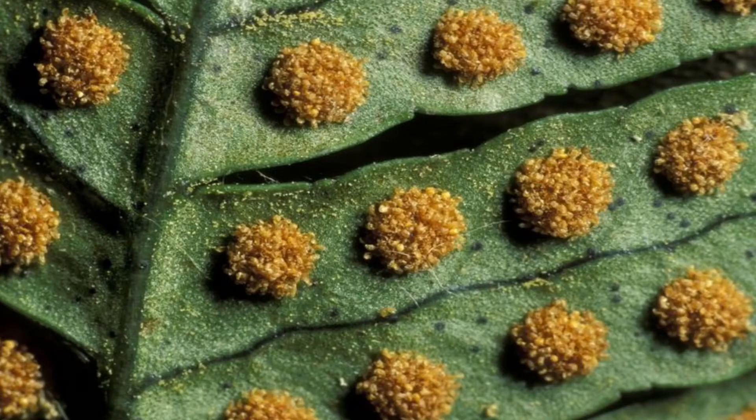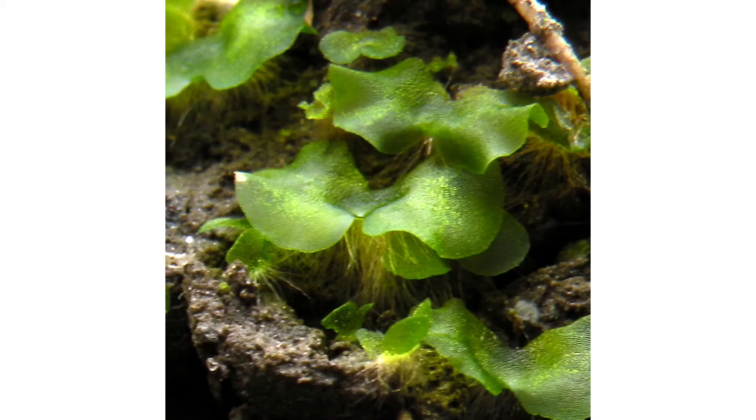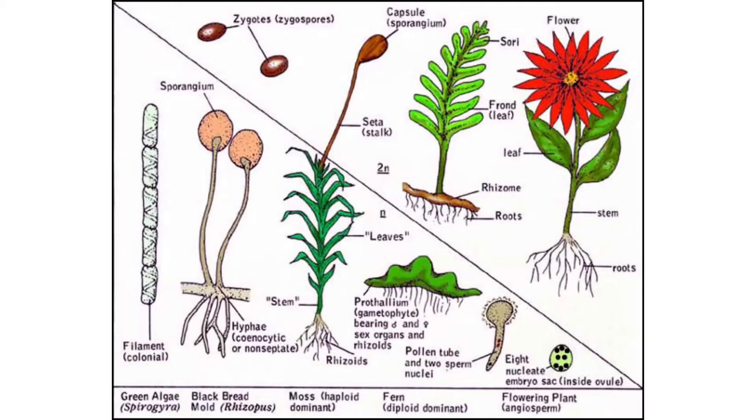In the gamotype stage, the plant produces eggs and sperm cells. In the sporotype stage, the plant produces spores.